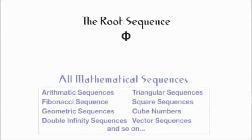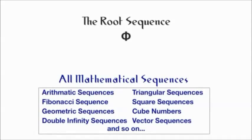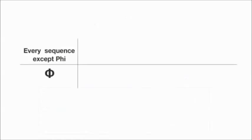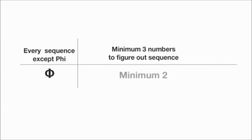This ratio could then span on forever, going smaller and smaller or bigger and bigger, forever. This ratio is infinite. It has no beginning and no end. It is also believed that Phi is the mathematical root of all other sequences. See, every mathematical sequence in existence needs a minimum of three numbers to figure out the sequence. Phi only needs two.